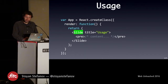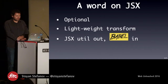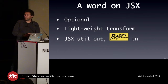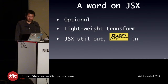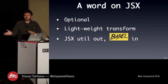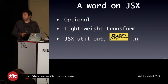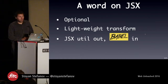A word on JSX. If you're not familiar, you see JavaScript with little things in the middle that look like HTML or XML. When React was first announced, there was a big backlash about XML appearing in JavaScript. JSX is completely optional — you don't have to use it; you can define components using pure JavaScript — but once you try it, you don't go back. It's a lightweight transform from component names and properties to JavaScript calls. Initially there was a utility called JSX Transform, but now we use Babel to do all those transformations.